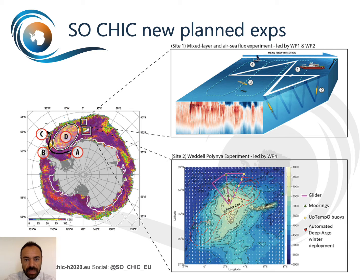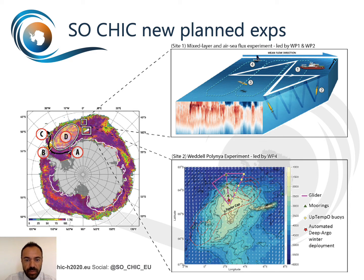SOSHIC brings together all the new observations and makes these observations openly accessible to maximize impact on climate reports, services and models. Existing infrastructure run by SOSHIC partners are shown in the picture with the letters A to D. In addition to these existing observations, target experiments will be done at two sites and will include the use of ship observation, free-drifting profiling gliders, and autonomous surface vehicles. In the open ocean, mooring and experiments will be conducted at site two and will include use of profiling gliders, moorings, surface buoys, and deep profiling floats.